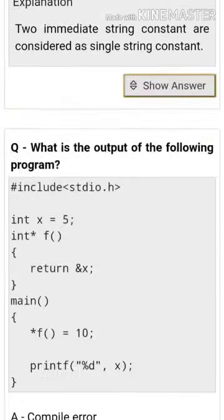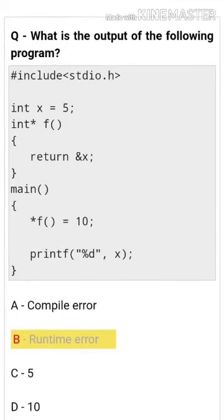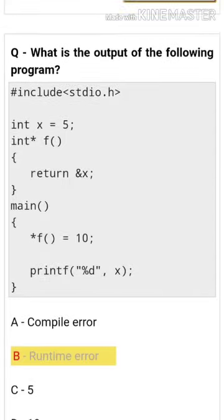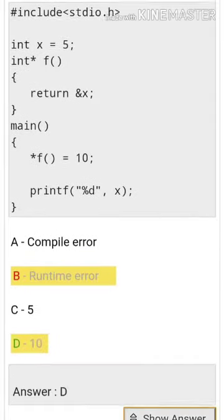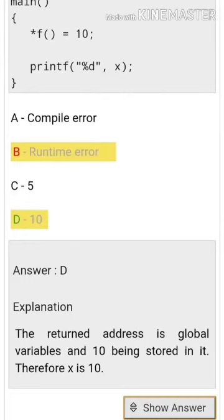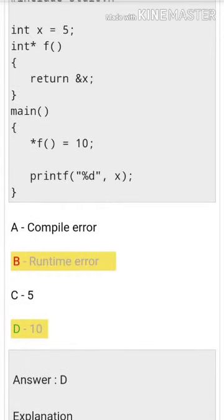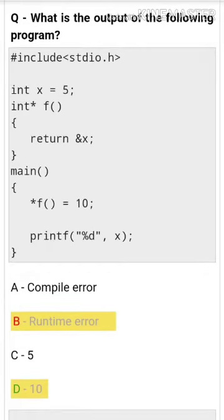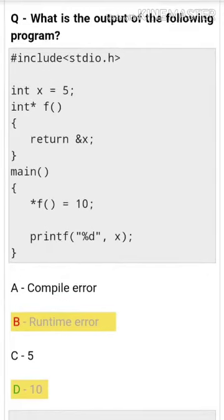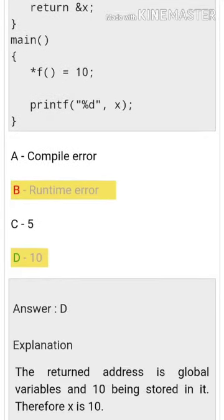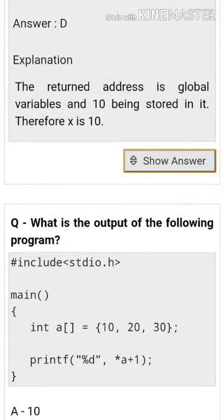What is the output of the following program? The answer is 10. The return address is a global variable with 10 being stored in it, therefore x equals 10 from the global variable.